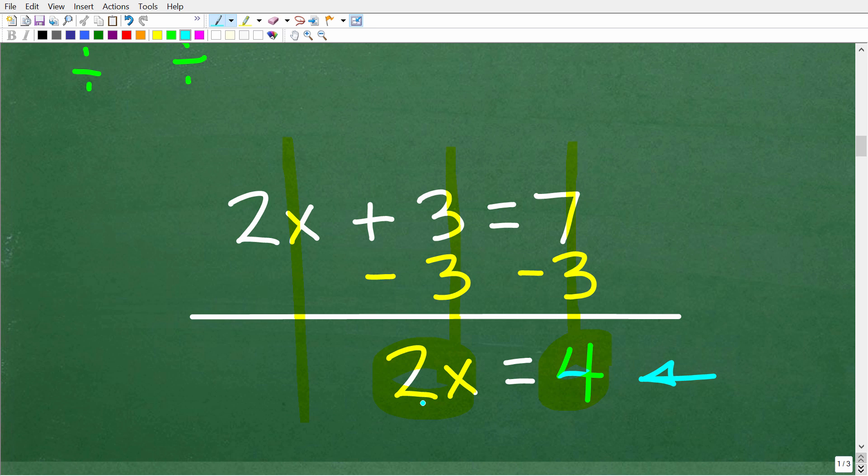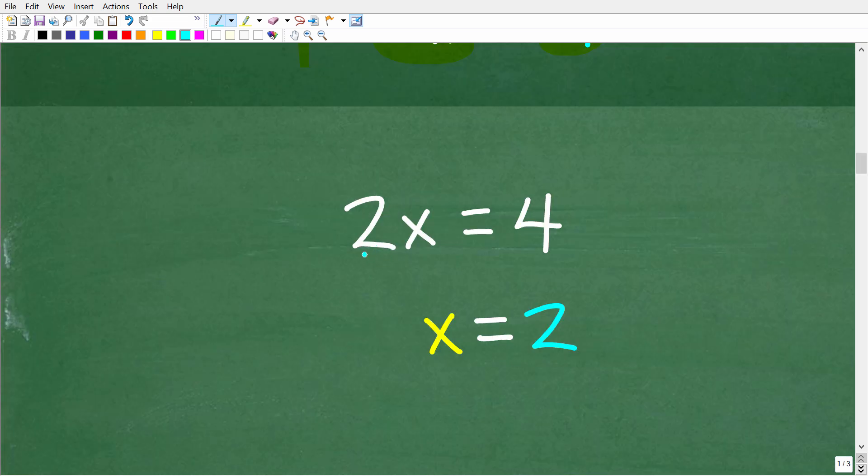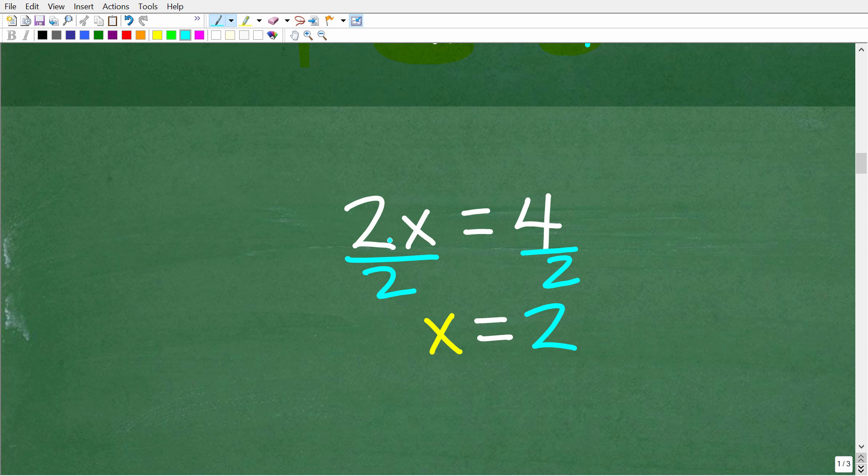All right, so now we're down to 2x is equal to 4. And to solve this simple equation, all we have to do is divide both sides of the equation by 2. So this is 2x, or 2 times x. So when we divide both sides of the equation by 2, notice again I'm doing the exact same operation. We have 2 divided by 2. That is 1, or 1x. But in algebra, you don't have to write the 1 in front of the x. You can just leave that as x. So x is equal to 4 divided by 2, which of course is 2.